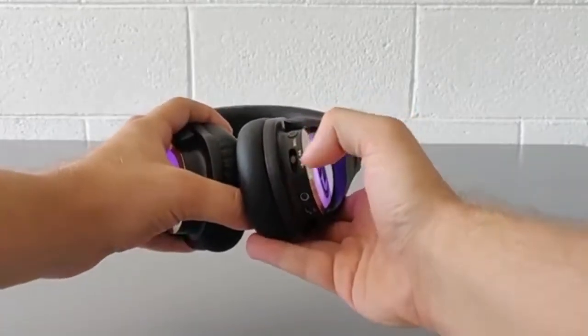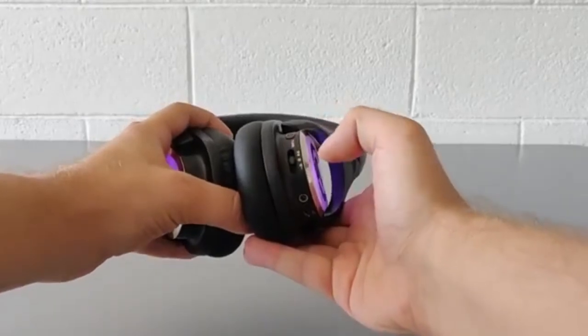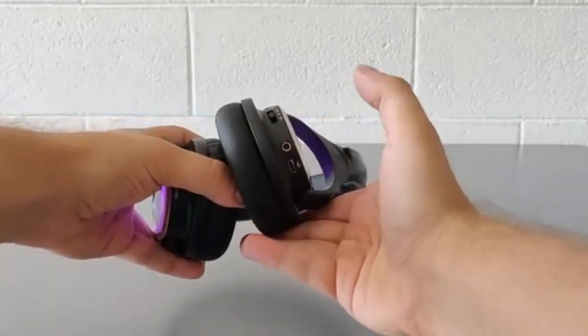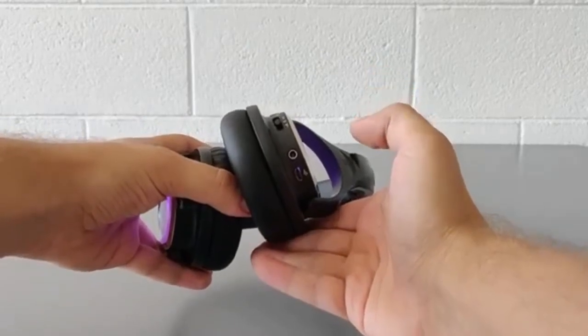Below the power button there is the volume switch, volume up and volume down. The audio input for using the headphones with an aux cable and the micro USB port for charging.